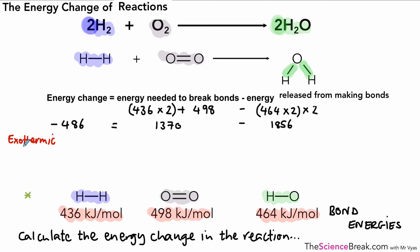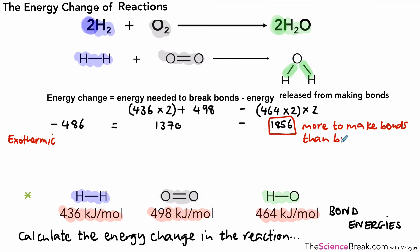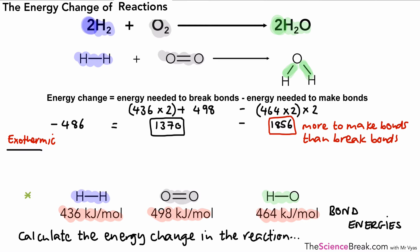The minus number tells us this is an exothermic reaction. And if you remember from previously, we said that if the energy released from making bonds is more than the energy needed to break the bonds, that's also another way of telling that it's an exothermic reaction. So in this case, we've got more energy released from making the bonds than energy needed to break the bonds. It's important you get that terminology right: energy needed to break bonds and energy released from making bonds.